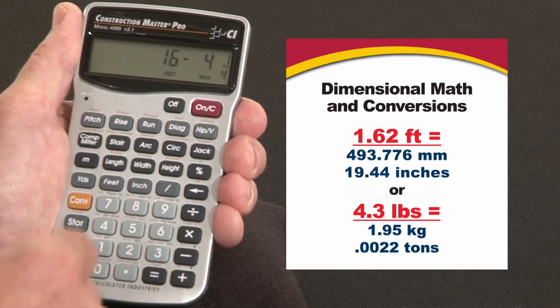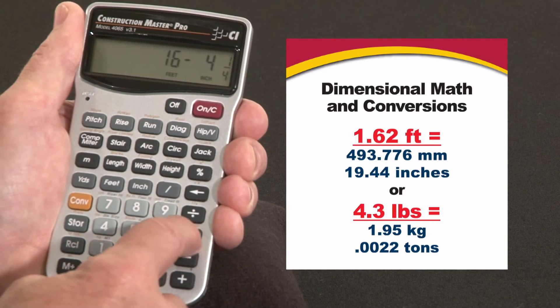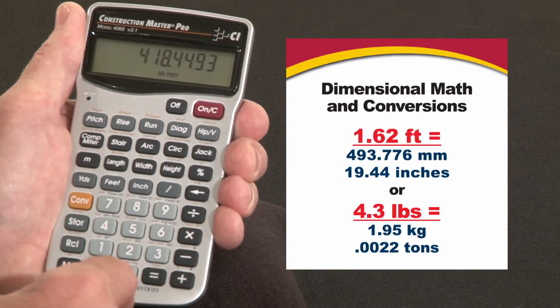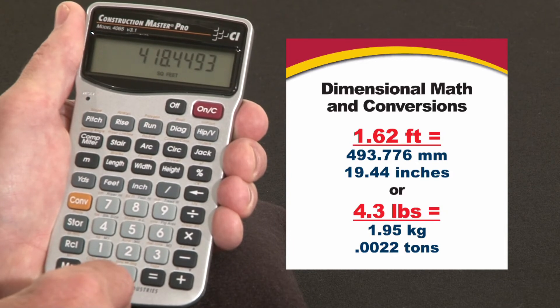Or multiply. Say that's one side of a pad we want to pour. By twenty-five feet seven inches. There's our square footage. Square area.